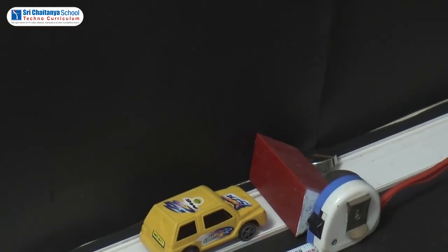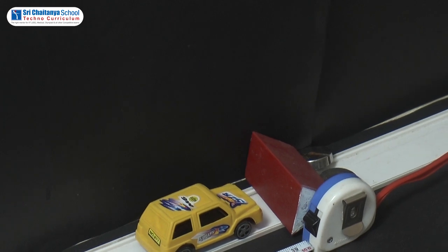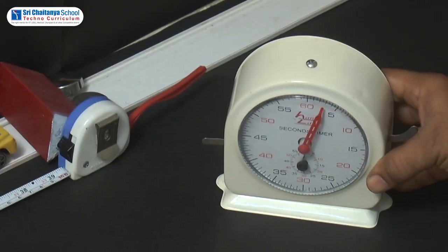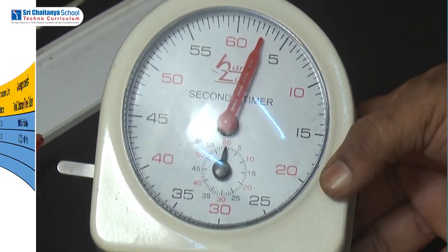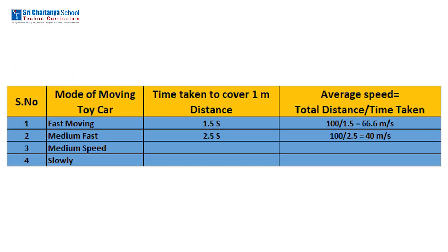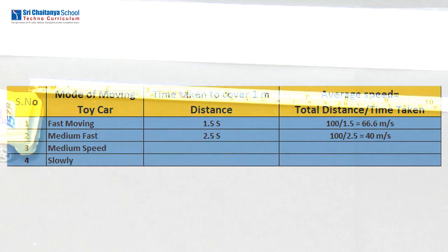Now allow the car to go with some other speed. This time the time measured is 2.5 seconds. Tabulate the time taken as 2.5 seconds. Speed is equal to 100 divided by 2.5, which is equal to 40 centimetres per second.